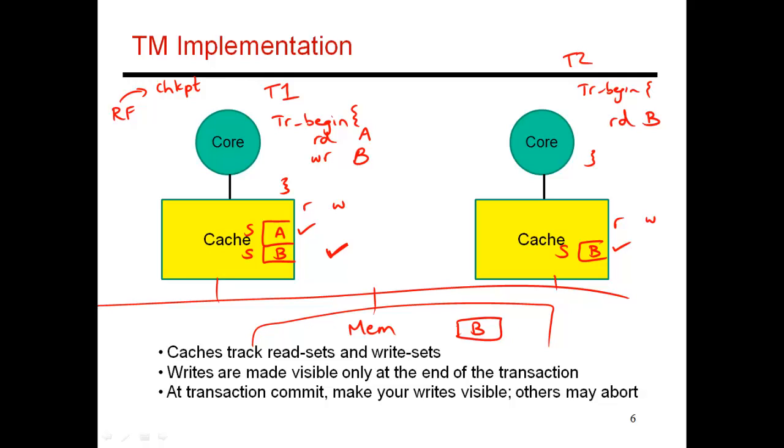These two transactions are both proceeding in parallel. Then let's say the transaction in T1 gets to its end first. When it reaches its end, if it has not been invalidated by anyone else at this point, it knows that the entire transaction has executed successfully.